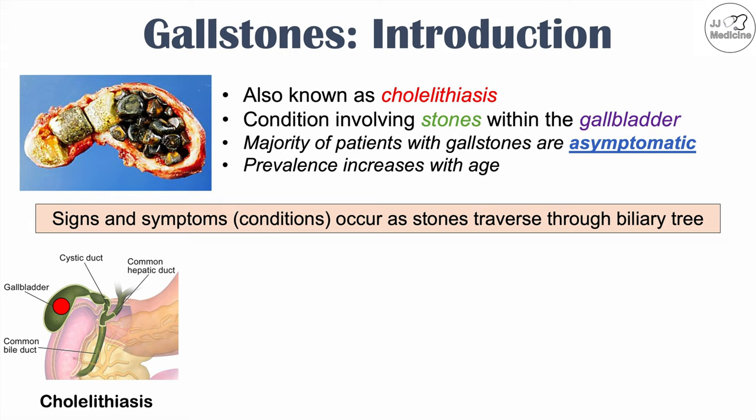I'm going to briefly discuss the anatomy of the biliary tree, including the gallbladder and some of the ducts that lead to and from the gallbladder. The gallbladder receives bile from the liver via two hepatic ducts that lead to a common hepatic duct. The gallbladder stores bile, which is released through the cystic duct, ultimately into the common bile duct and into the duodenum — the first part of the small intestine.